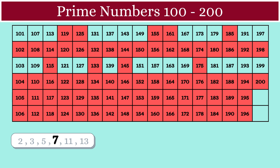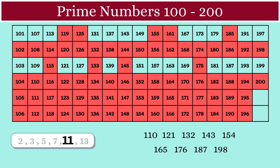Now let's handle the multiples of 11 and 13 in a slightly different manner. The multiples of 11 in this table are shown here. Out of these, only 3 numbers — 121, 143, and 187 — are unmarked. So we will be marking these multiples as composite numbers.